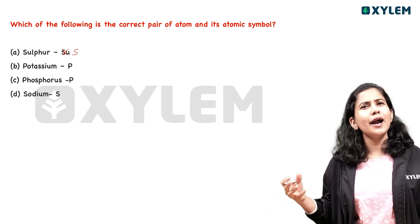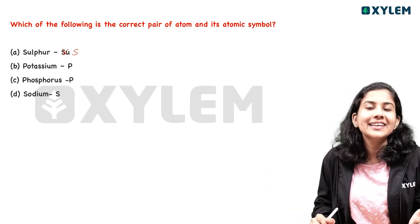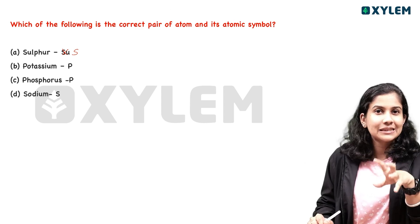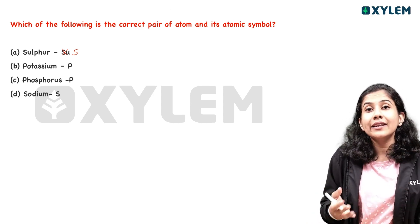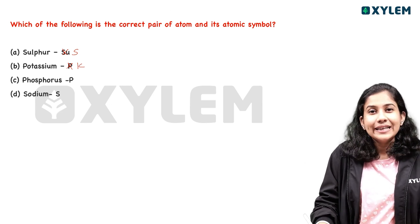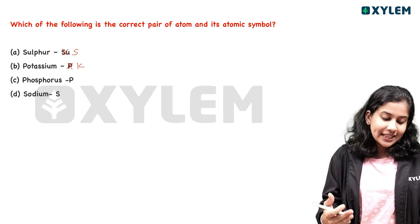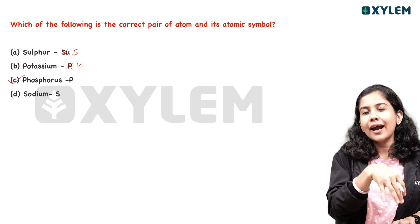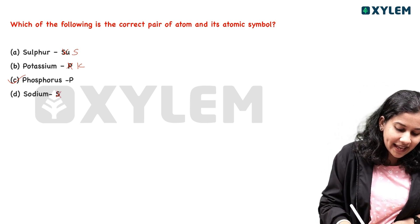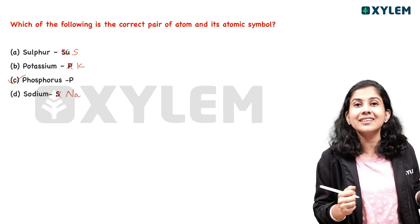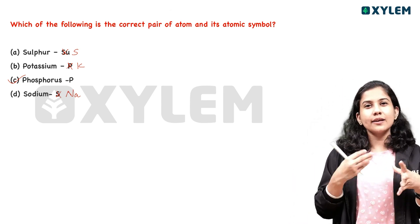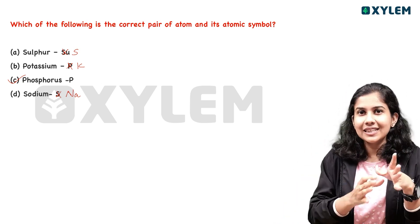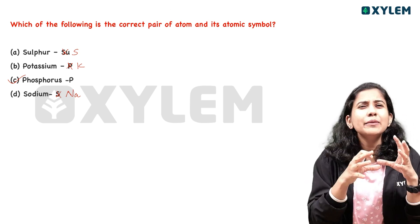Potassium — P is the first letter of the English name, but we have not included the English name in the symbol. The Latin name of potassium is Kalium, so it is called K. What is Phosphorus? Phosphorus is P. What about sodium — is it S? No, it is Na, because the Latin name is Natrium. If you use the wrong symbol, it is not correct.